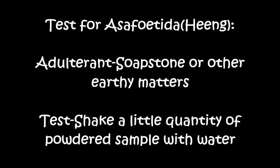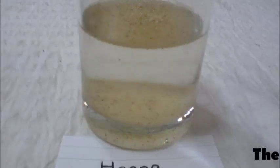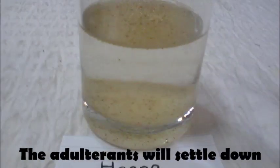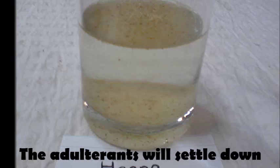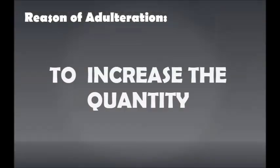Test for Coriander/Spice Powder — adulterant: soap, chalk, or other earthy matter. Shade a little quantity of the powder sample with water. The adulterant will settle down. Reason of adulteration: to increase the quantity.